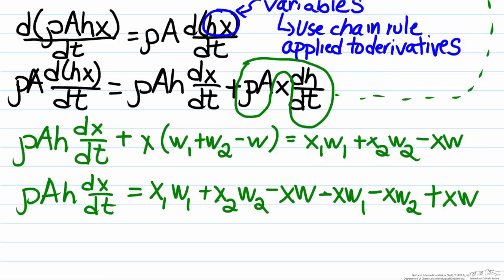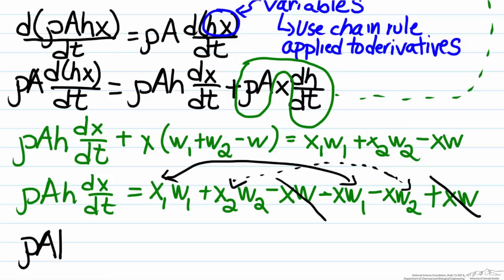By looking at our terms on the right hand side, the first thing that jumps out is that the xw terms can cancel. The second thing we can do here is group together our w1 terms and our w2 terms. Once we complete this we've reached our final mathematical model. We have ρ A h dx/dt equals w1 multiplied by (x1 - x) plus w2 times (x2 - x).